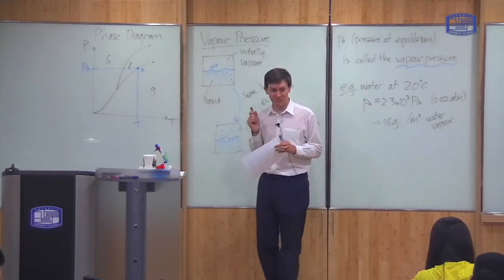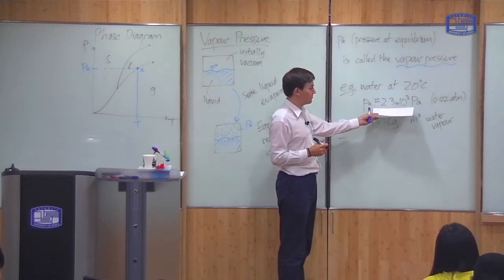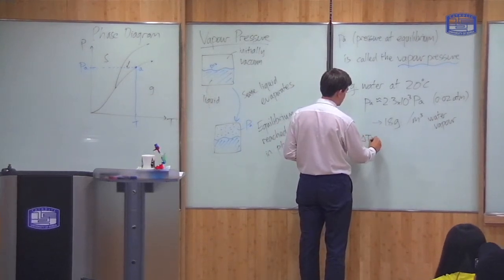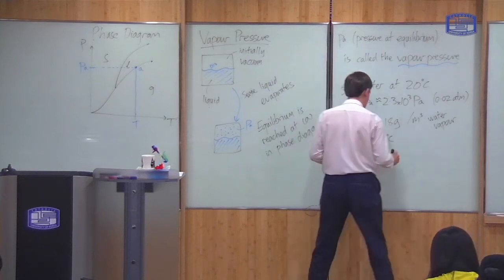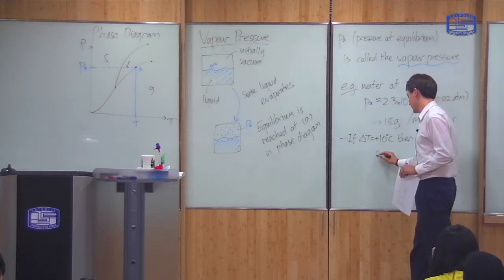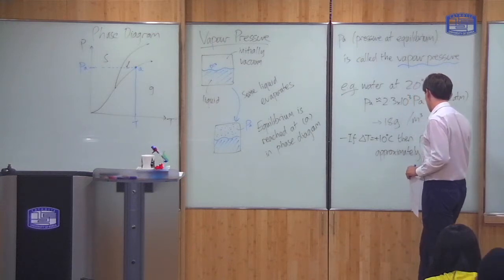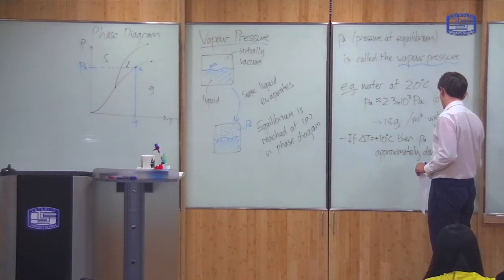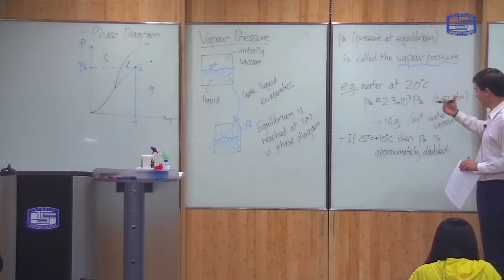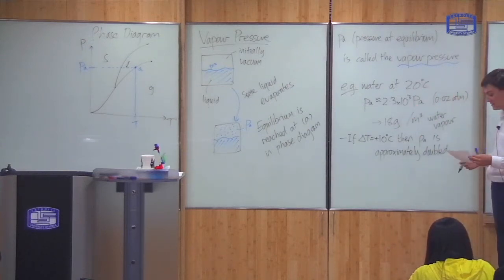As I said, the vapor pressure does depend on temperature, and it depends quite significantly on temperature. If I change the temperature by 10 degrees, then the vapor pressure for water approximately doubles. So if ΔT increases by about 10°C, then P_A is approximately doubled — which means it's a logarithmic dependence on temperature. Changing by plus or minus 10 degrees either doubles or halves the vapor pressure for water, so it's very sensitive to temperature.